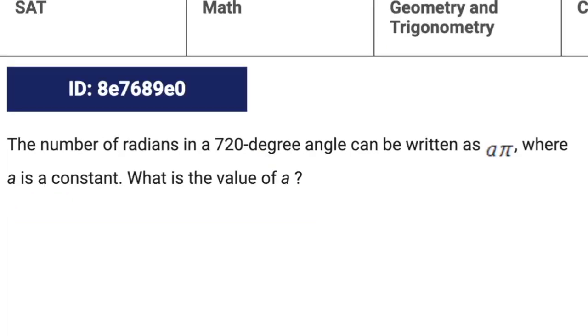All right, moving on to a medium question. Here we've got the number of radians in a 720 degree angle can be written as A times pi, where A is a constant. What is the value of A?